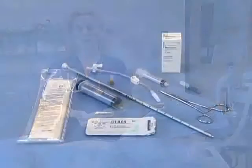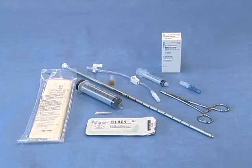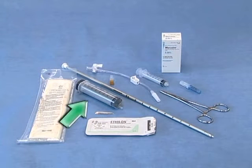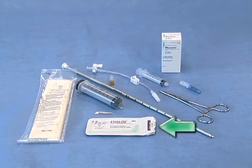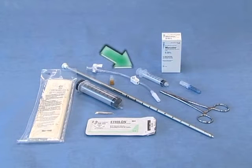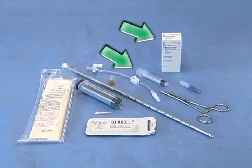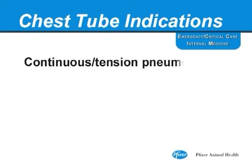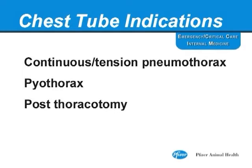In order to place a chest tube you will need sterile gloves, a sterile chest tube, a chest tube adapter with clamp, a syringe in order to aspirate any fluid or air that may have accumulated within the chest cavity, suture in order to secure the chest tube to the chest wall, and a syringe with bupivacaine in order to administer local analgesia to the pleural surface.